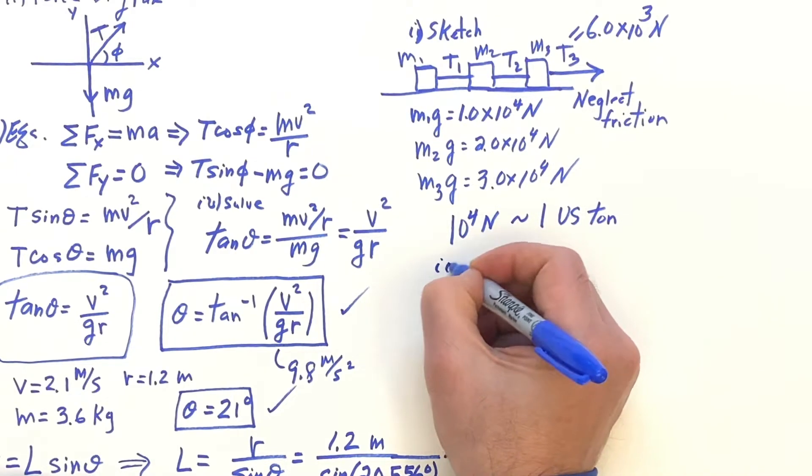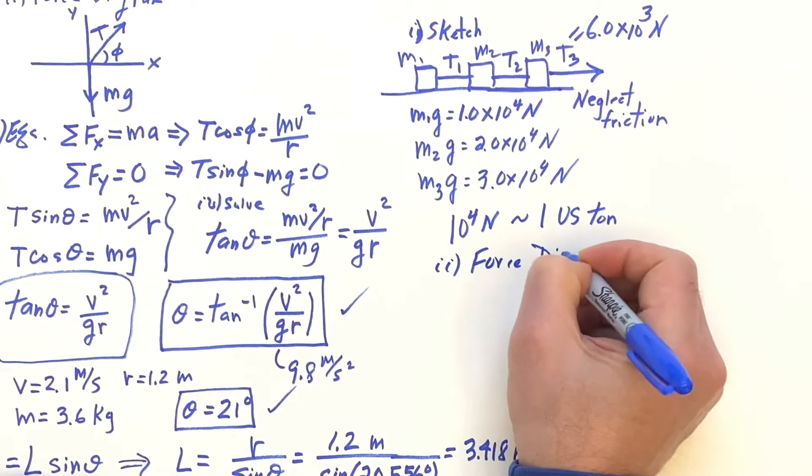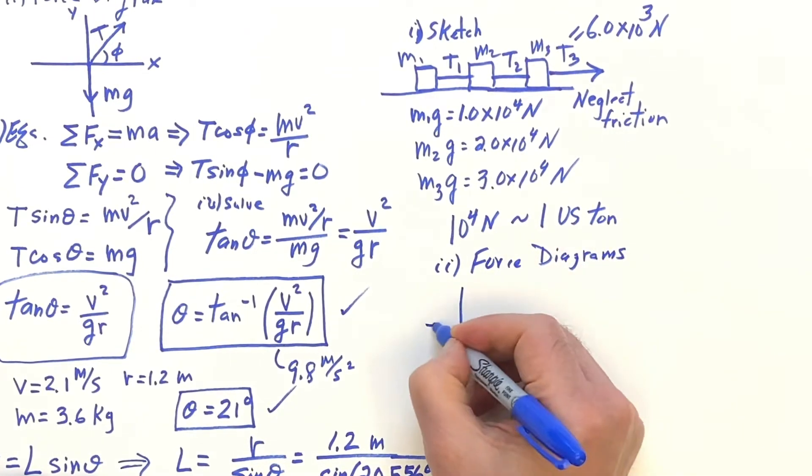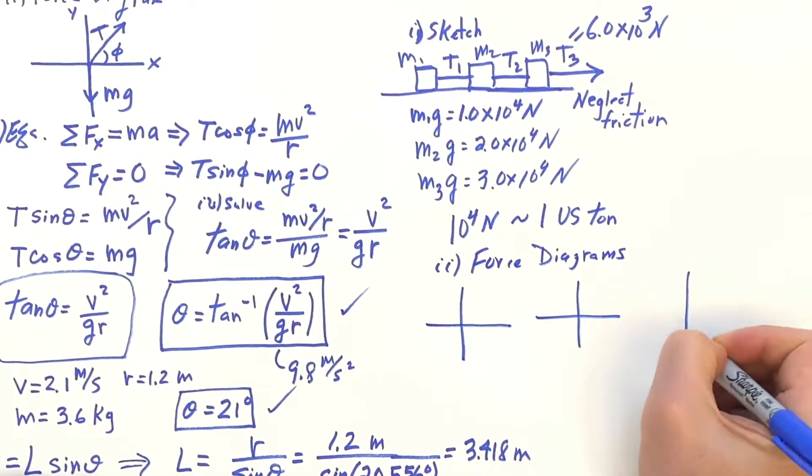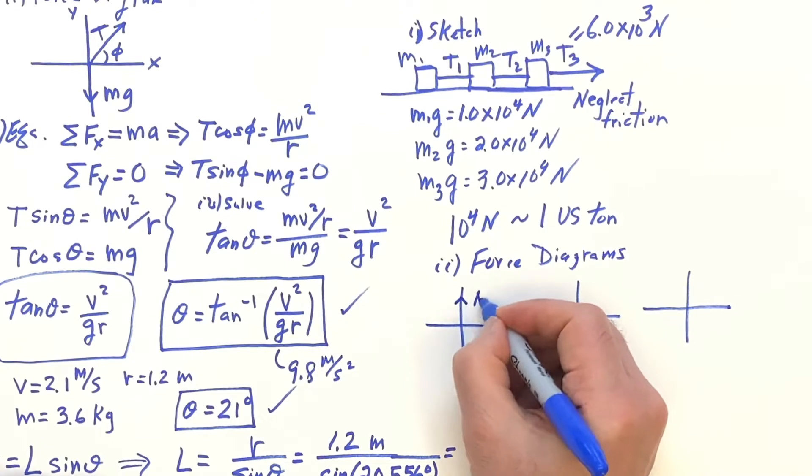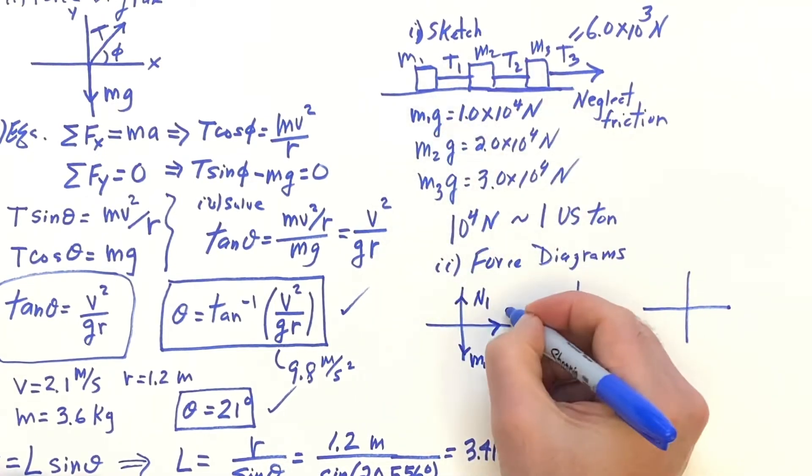Okay, it's time now for the force diagrams. And there's going to be three: one, two, three. So here, N1 going up, M1G going down, and the force to the right is T1.